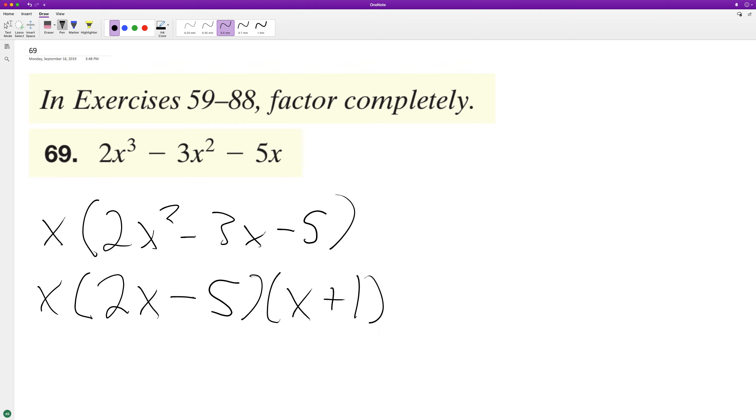Okay, let's test this out. So x times 2x squared plus 2x minus 5x minus 5. Combine like terms, we get 2x squared minus 3x minus 5.